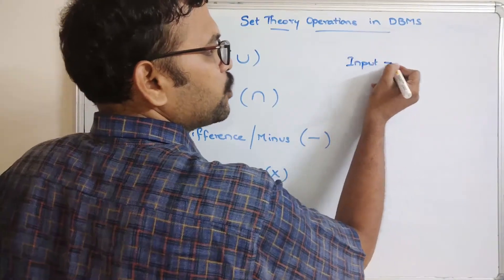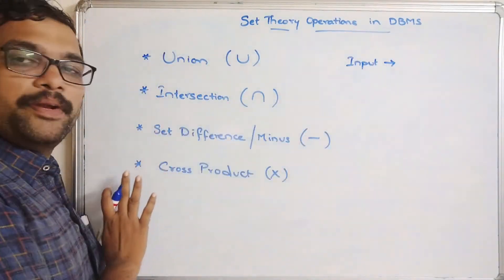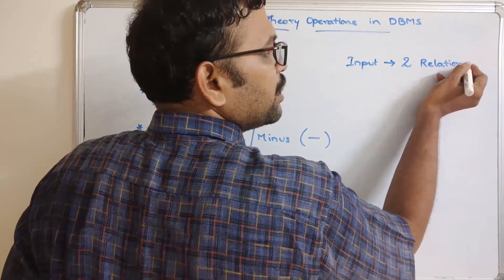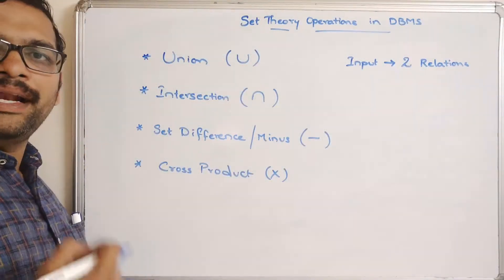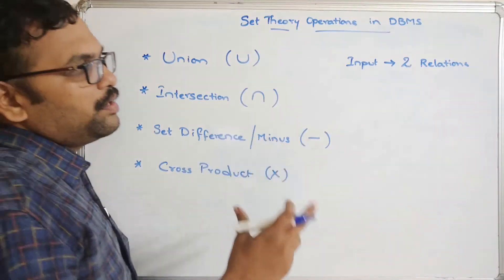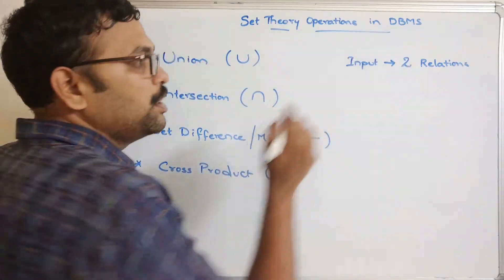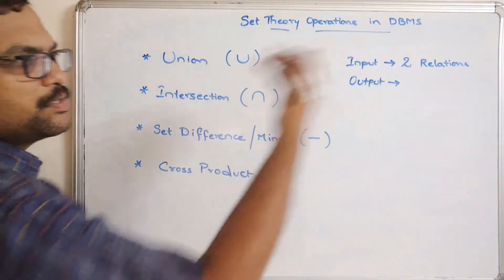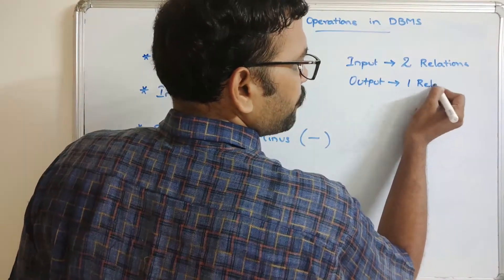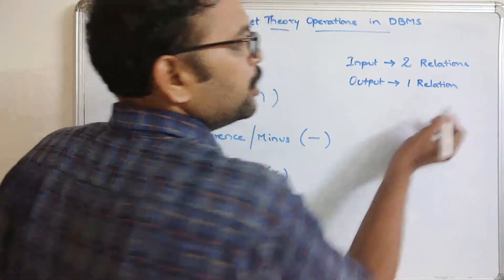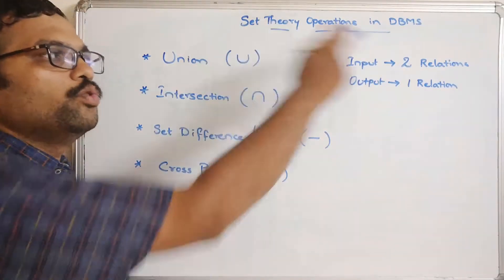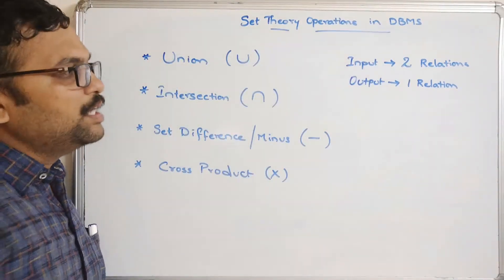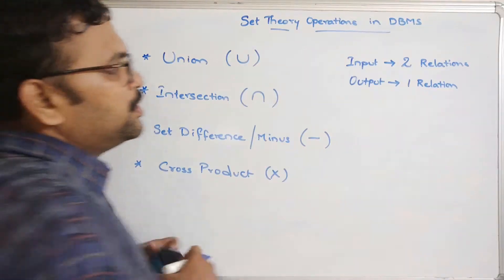The input for applying all these operations is two relations. In the relational model, a relation is nothing but a table. We are supposed to give two tables as input, and after applying these set theory operations we get one relation as the result.